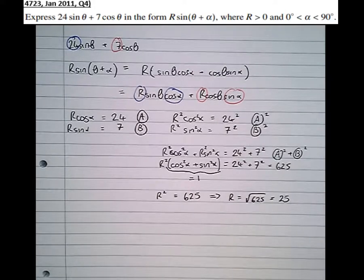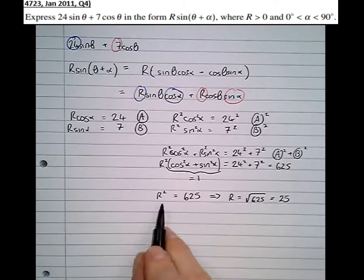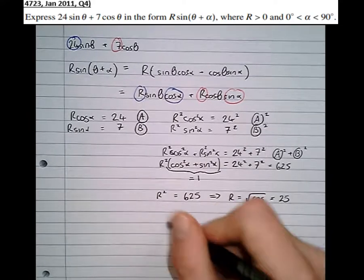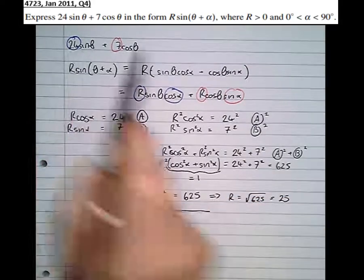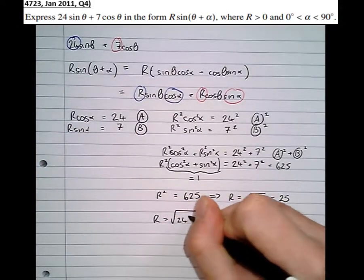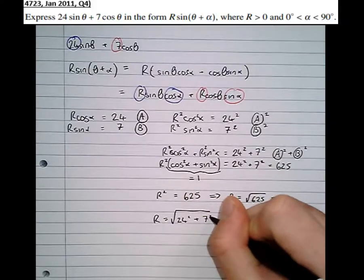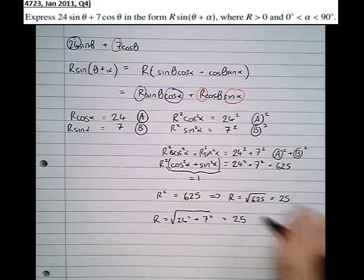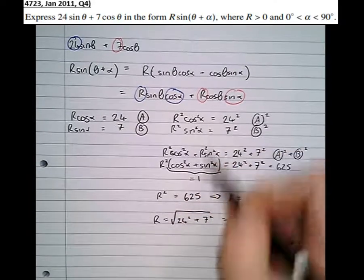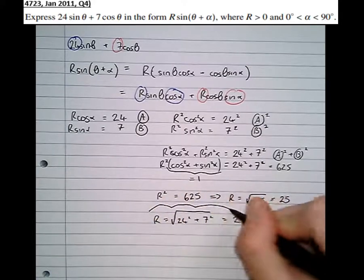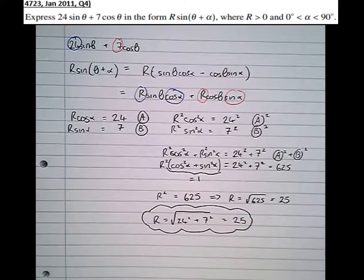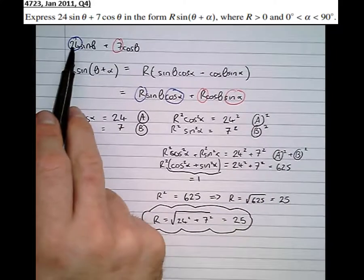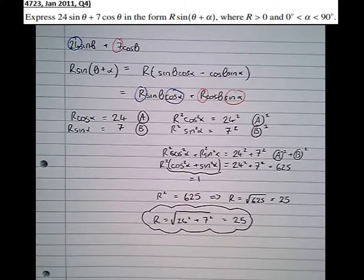In an exam, we can get a mark just by writing R equals the square root of the squares of the two numbers, which will work every time. This full proof shows why the method works, but it's acceptable just to write that single line — R equals the square root of 24 squared plus 7 squared, equals 25 — much like Pythagoras.